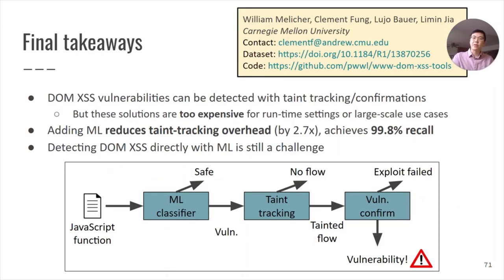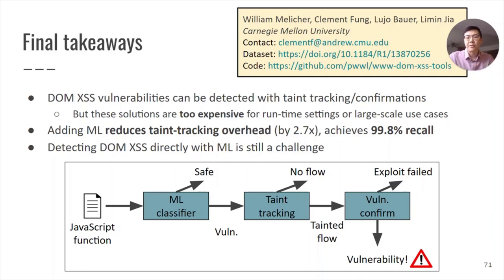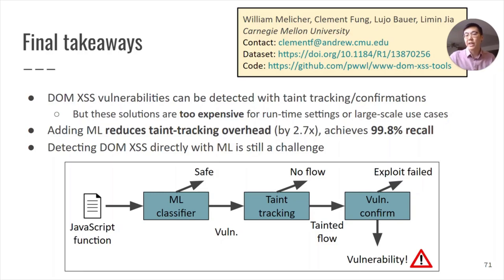In conclusion, our takeaways are as follows. DOMXSS vulnerabilities can be detected with a combination of taint tracking and proof-of-concept exploits, but currently these solutions are too expensive to be used in runtime settings or large-scale use cases. By adding machine learning to these solutions, we're able to reduce the overhead of taint tracking by up to 2.7x and achieve 99.8% recall while still doing so. Additionally, detecting DOMXSS directly with machine learning is still a challenge and is left for future work. Our training and test bag-of-words datasets and the code used to parse our datasets and train our machine learning models are also provided. Thank you very much for your time, and I look forward to hearing from you at the Q&A.